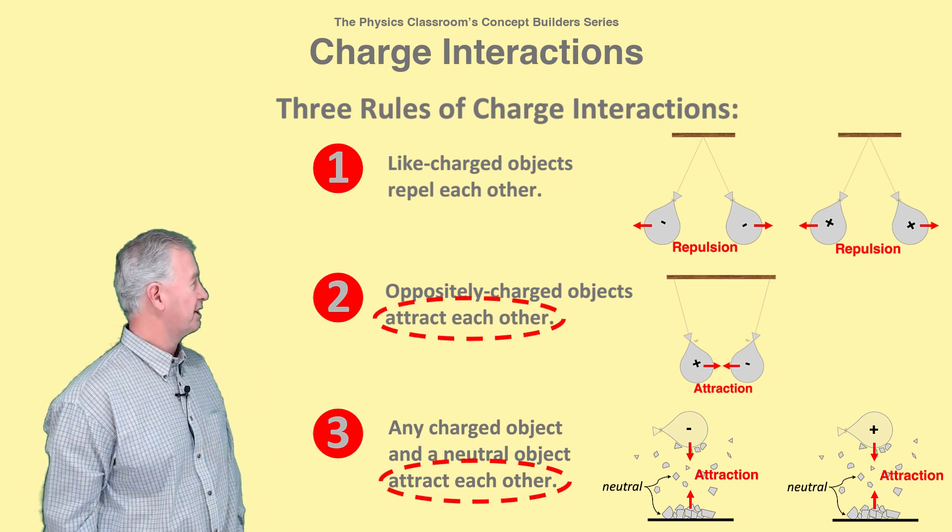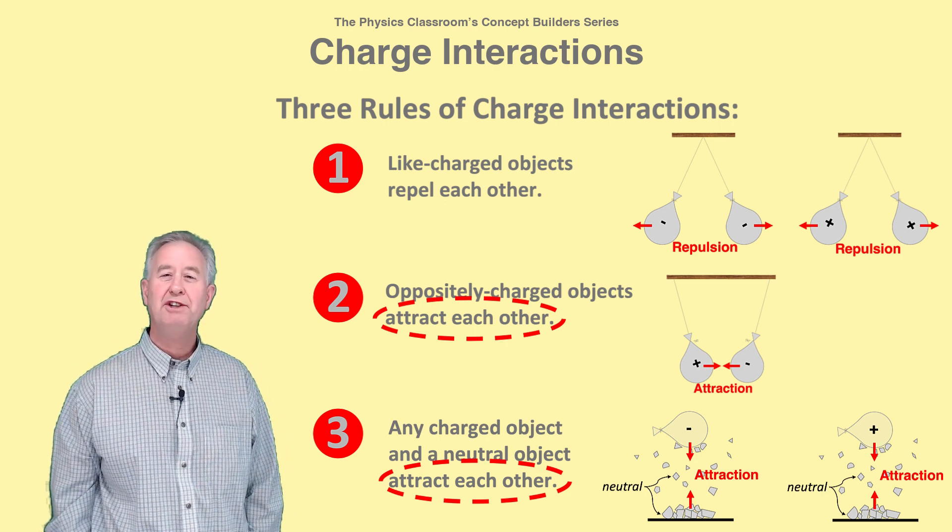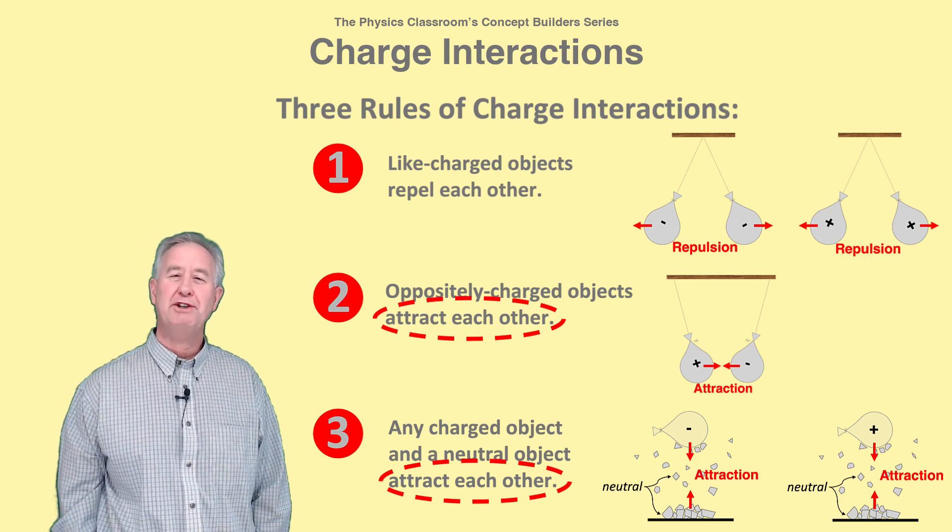Notice that attract each other appears on our list twice. So if two objects are observed to attract each other, there are two explanations as to why.